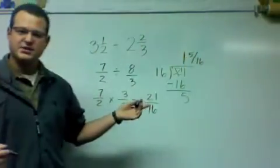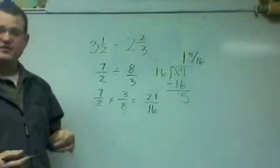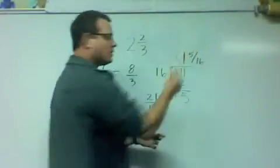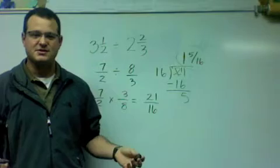My final answer to the problem, 3 and a half divided by 2 and 2 thirds is 1 and 5 sixteenths. How about that?